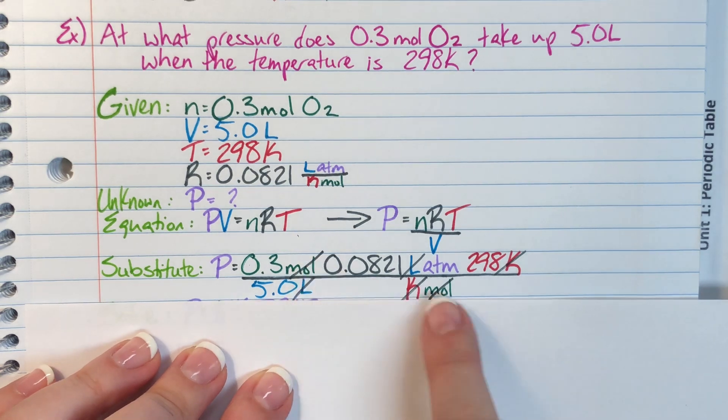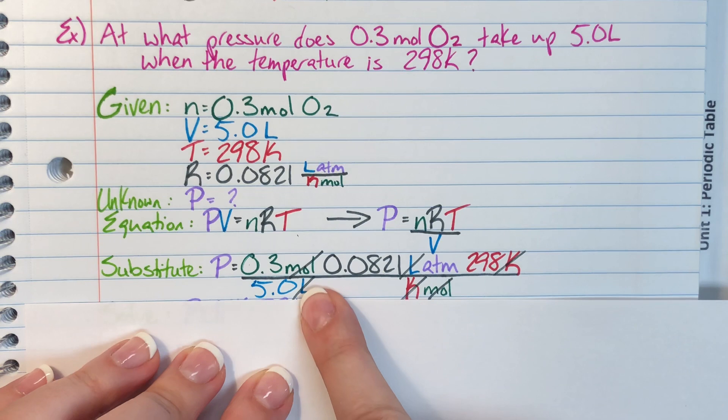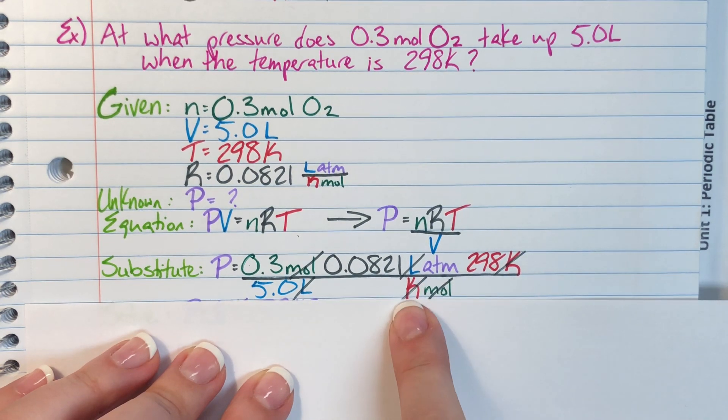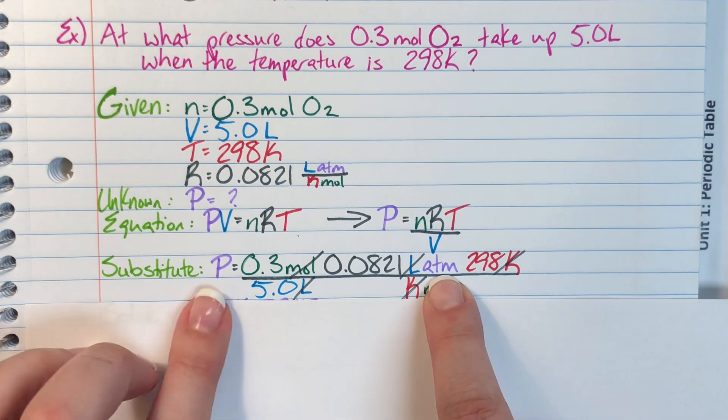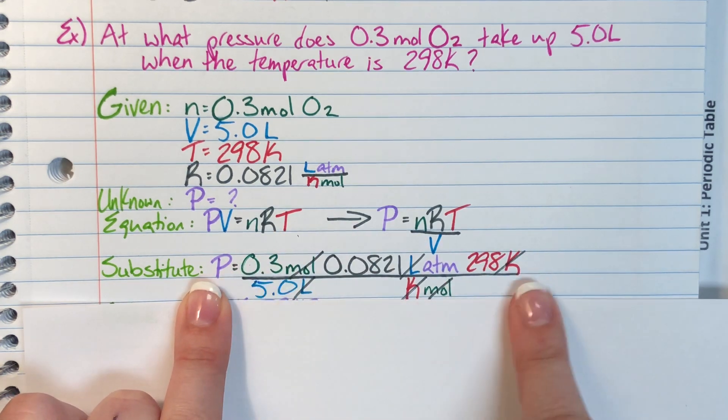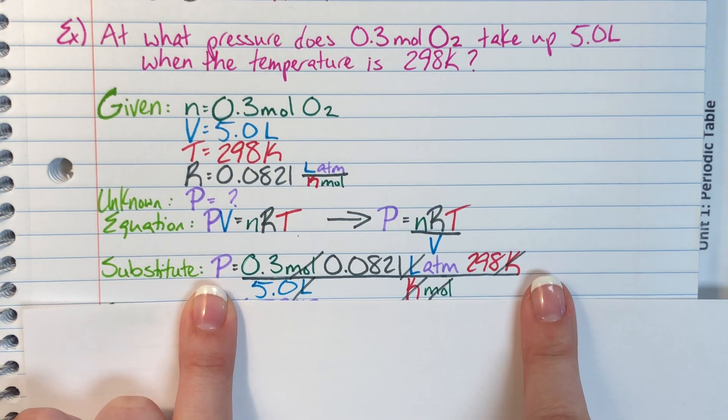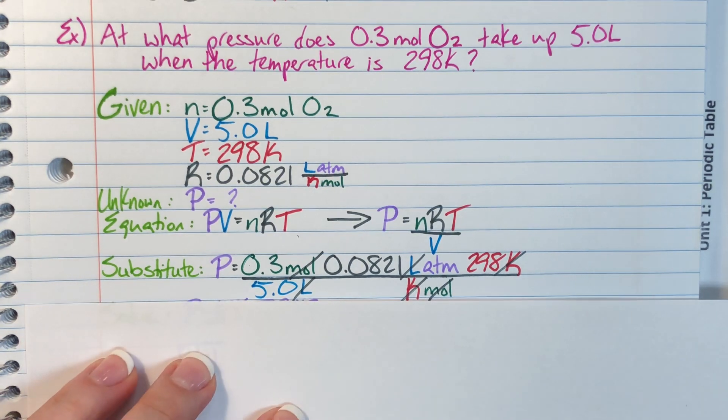Then I'm going to go through and cancel out any units that appear twice. I have moles and moles, so that's going to cancel. I have liters and liters, so those will cancel. And I have Kelvin and Kelvin, so that will cancel. The only unit that I have left is atmospheres, which is an appropriate unit for pressure. So I know that I not only solved this equation correctly, but I have canceled out the appropriate units.